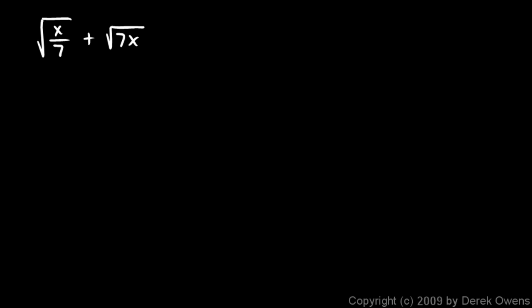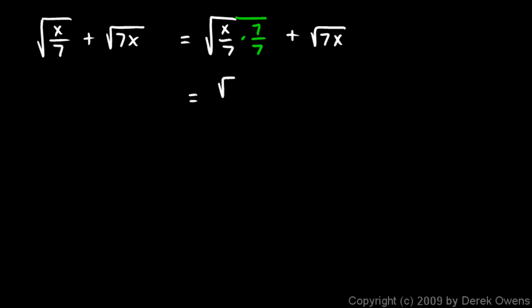Here's another example: the square root of x over 7 plus the square root of 7x. Let's think about how we can take care of this — let's get this fraction taken care of under the radical first. I'll rewrite this as the square root of x over 7 and extend my radical, multiplying by 7 over 7. That will get my fraction out from under the radical. I still have plus the square root of 7x. This gives me the square root of 7x over 7, because down here on the bottom, 7 times 7 when square rooted just gives 7. And then I still have this square root of 7x over here.